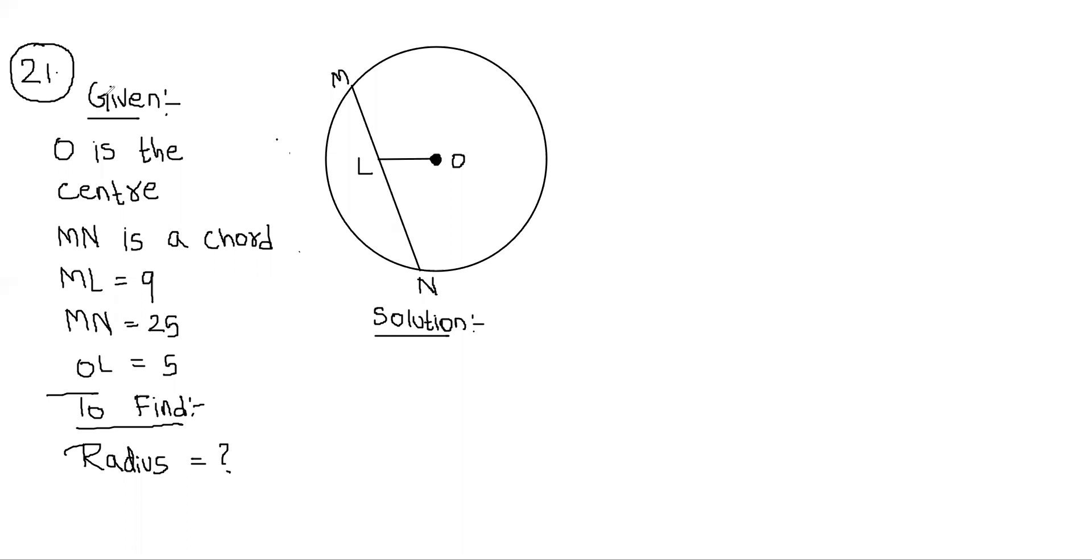Okay, let us start the 21st sum. What is given in the question? O is the center of the circle. MN is the chord of the circle. ML is equal to 9 units. The whole MN is equal to 25 units. That means LN will be 25 minus 9, that is 16 units. They are asking us to find the radius. They have also given OL as 5.